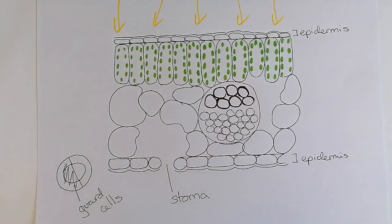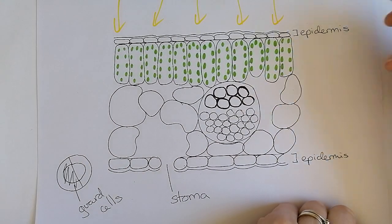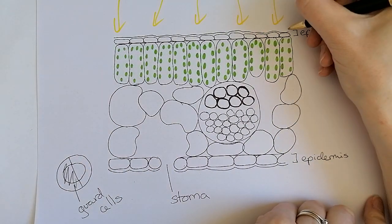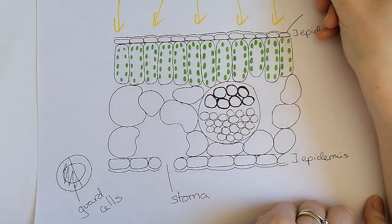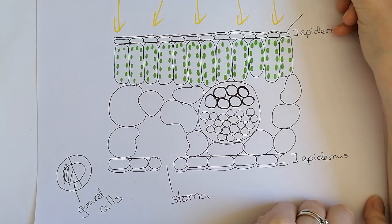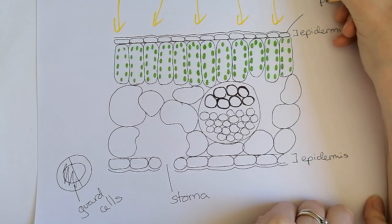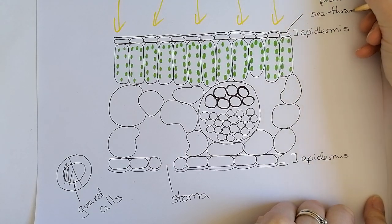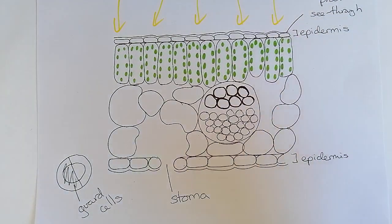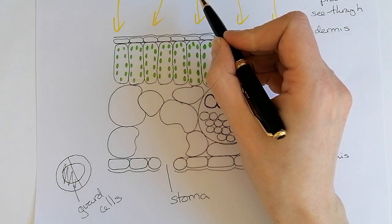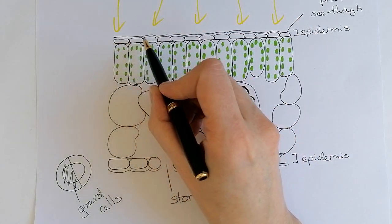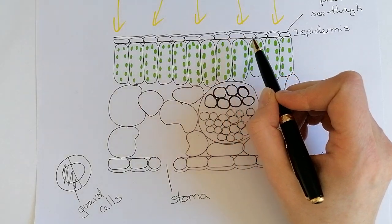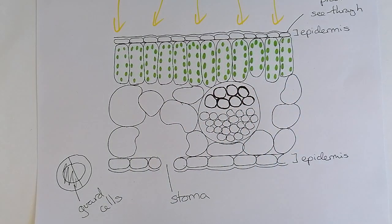The upper epidermis has a layer here which is waterproof and see-through. Because it's see-through, all of the light can travel through it. Nearly all of the light can travel through these epidermis cells as well, so hardly any of the light has been stopped at any point.